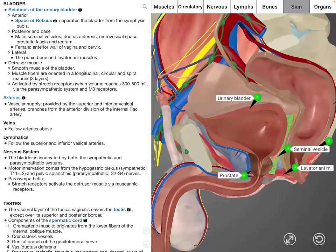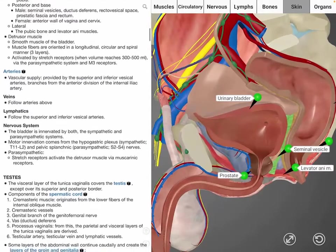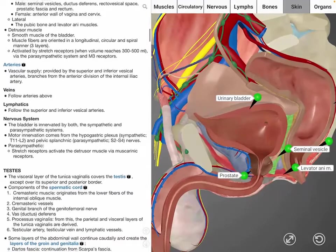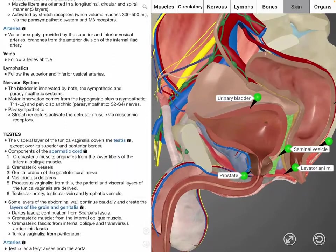The blood supply to the bladder is from the branches of the internal iliac artery known as the superior and inferior vesicle arteries. The blood is drained into a network of vesical veins. The lymphatic drainage for the bladder follows the superior and inferior vesicle arteries.